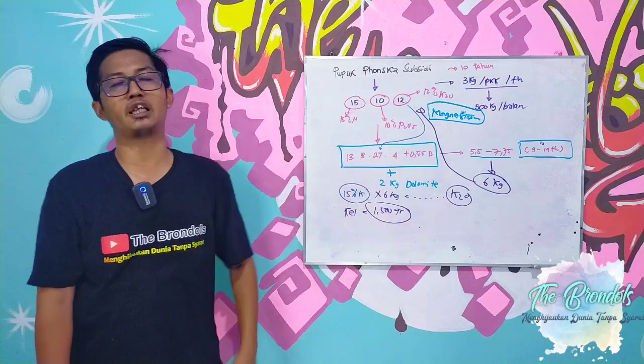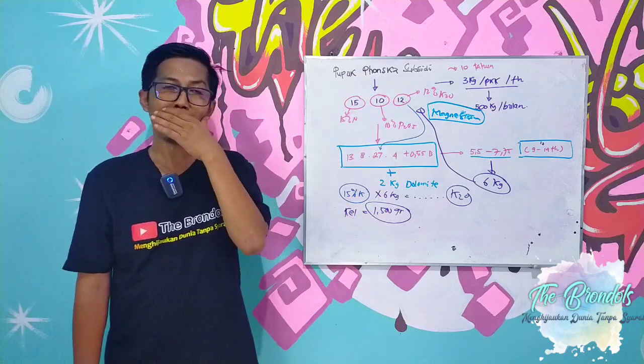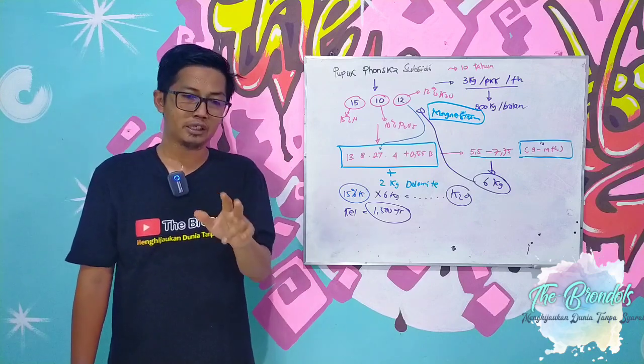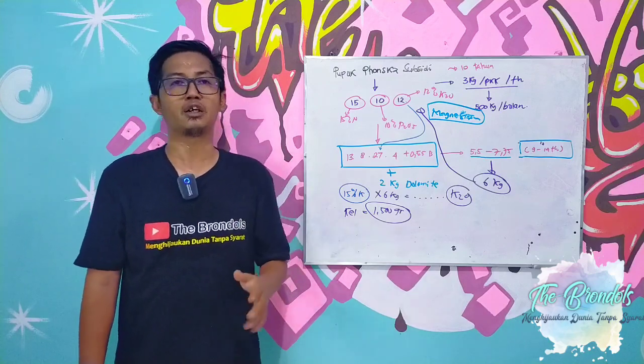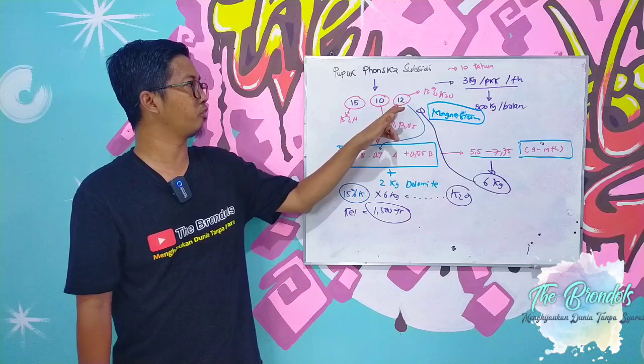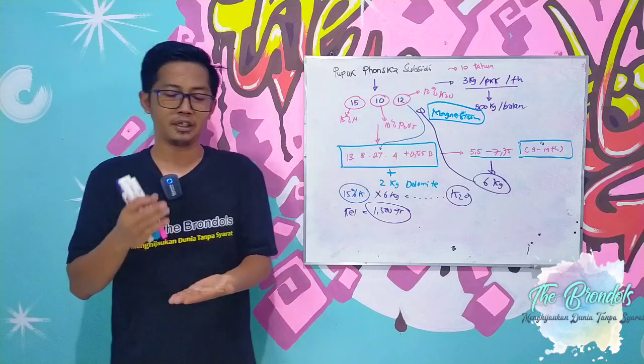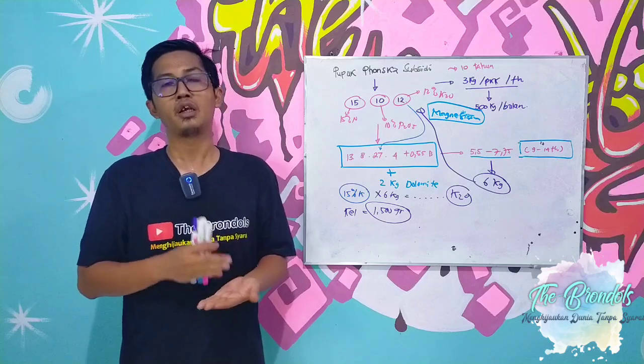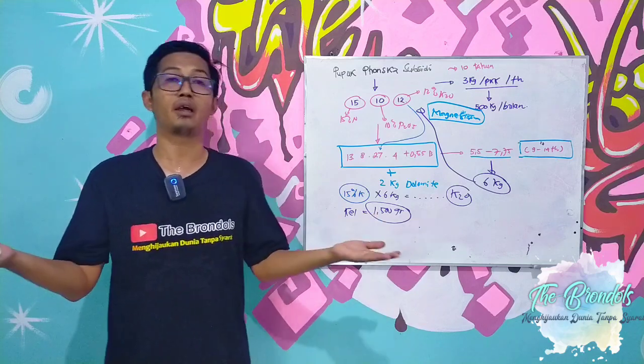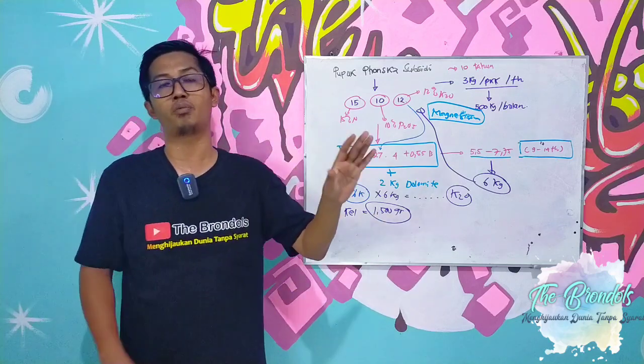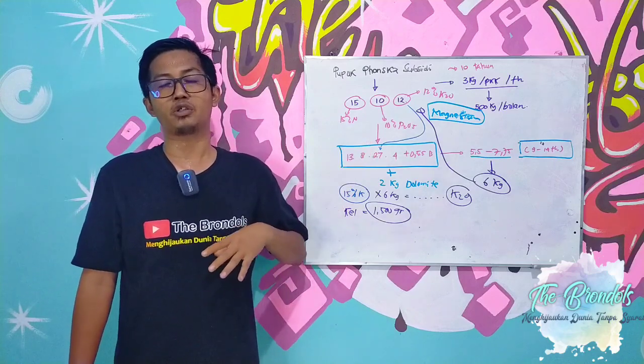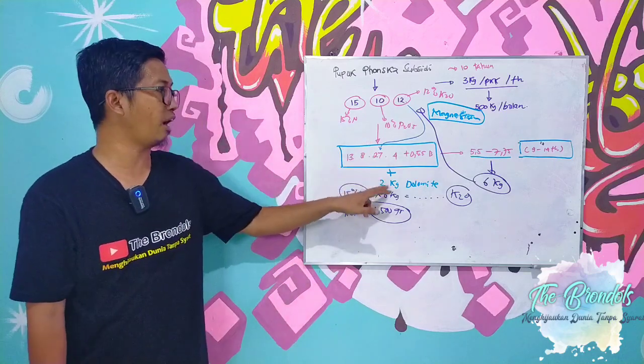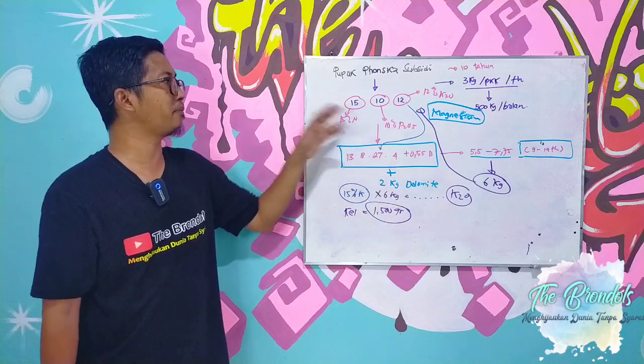You must add KCL 1,150 grams, which means farmers, when we use only Ponska for a long period of time - because the main component of fruit bunches or TBS itself is mostly potassium - when potassium is not fulfilled, we can't talk about tonnage.